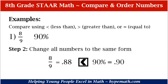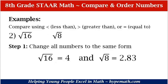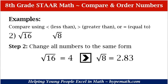Our inequality sign — the mouth of the inequality sign — always opens up to the largest number. Let's look at number 2: the square root of 16 and the square root of 8. We are going to change both numbers to decimals. The square root of 16 is a perfect square — it's equal to 4. And the square root of 8 is 2.83. There will be a link above for the video where we reviewed how to find square roots. Looking at our numbers, 4 and 2.83, we can see that 4 is greater than 2.83, or that the square root of 16 is greater than the square root of 8.